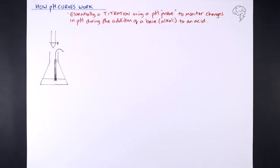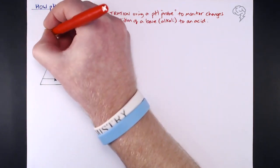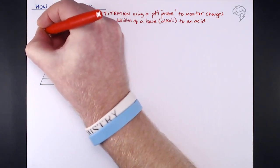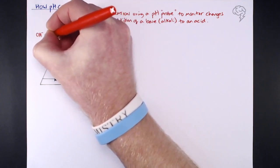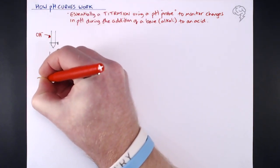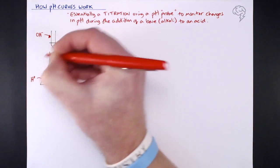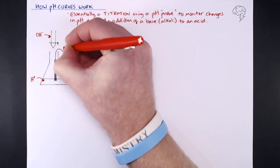Really importantly, we've got our alkali or our base in the burette, we've got our acid in known volume and concentration in the conical flask, and we're adding the alkali to that. And of course that's our pH probe there.